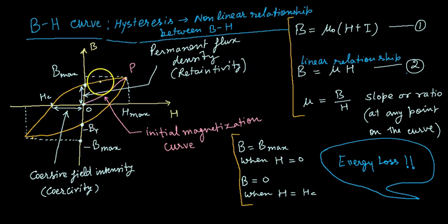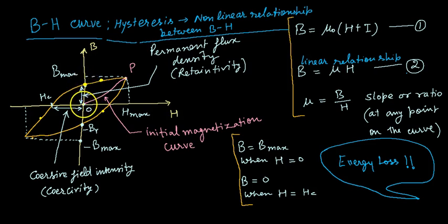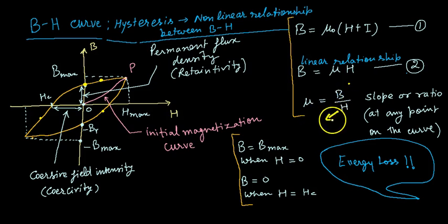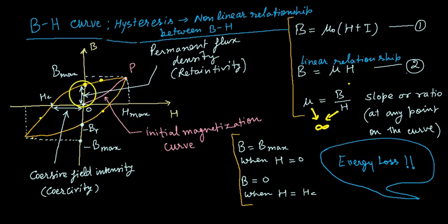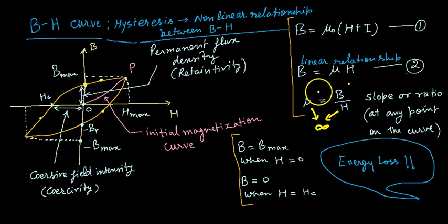At this particular point, which is known as retentivity in the positive direction, when H = 0 you observe some value of B, so μ becomes infinite. This is an interesting situation — permeability becomes infinite here — and there are applications of that, though we will not go into that discussion now.